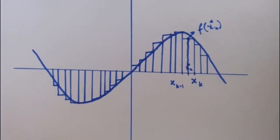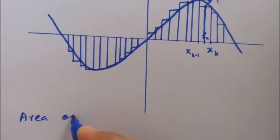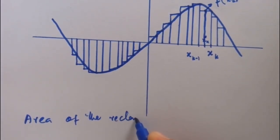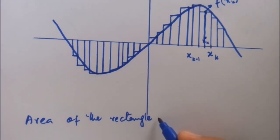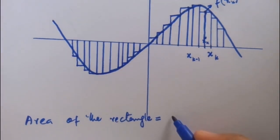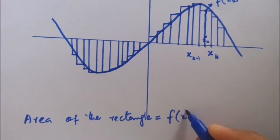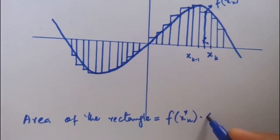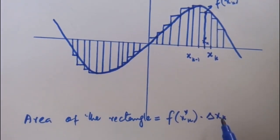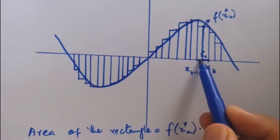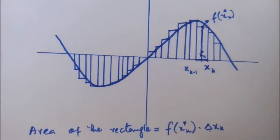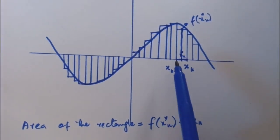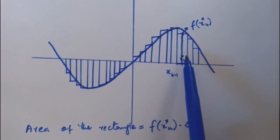So the area of each rectangle is equal to f(x*k) times Δxk, where Δxk is the width of the k-th sub-interval.